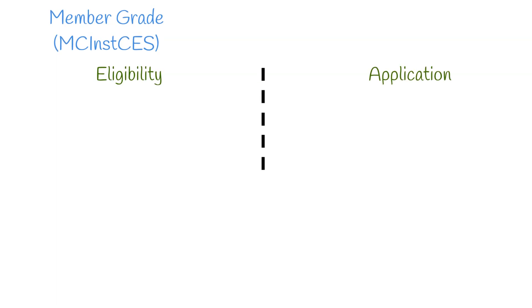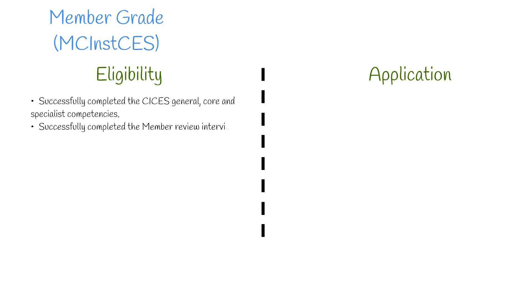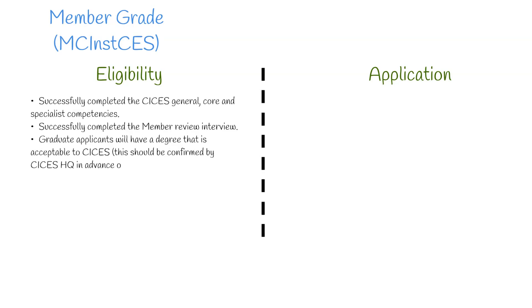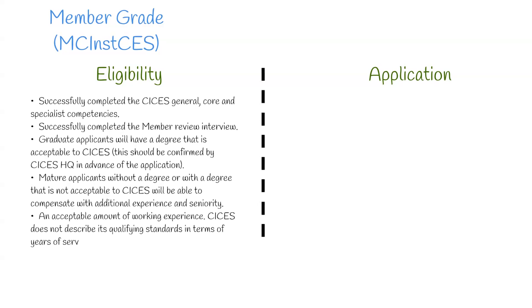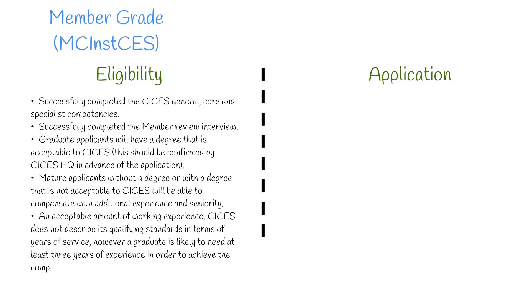Moving on, we have Member grade, which includes a designation. For eligibility, a member will have successfully completed the CICES general, core and specialist competencies and the member review interview. Graduate applicants will have a degree acceptable to CICES, confirmed by CICES HQ in advance. Mature applicants without a qualifying degree can compensate with additional experience and seniority. CICES does not define its qualifying standards in terms of years of service; however, a graduate is likely to need at least three years' experience, whilst the mature applicant will normally be expected to have at least eight.